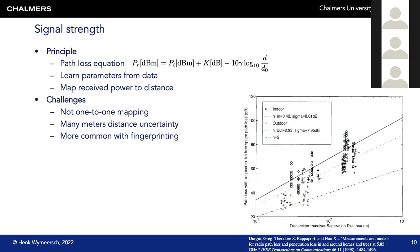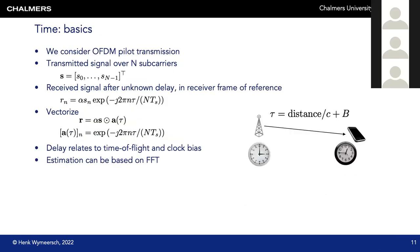Looking at different measurement types: first, received signal strength — when you're further from a base station the signal is weaker, so in principle you could map RSS to distance. In practice this doesn't work well due to high variation. RSS is therefore only used for fingerprinting: a device measures RSS from many access points, looks in a database for which locations match that fingerprint, and positions itself that way — never via direct inversion.